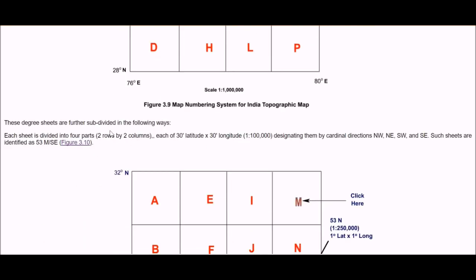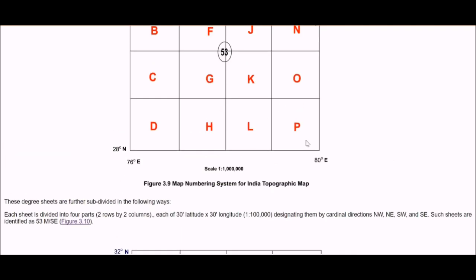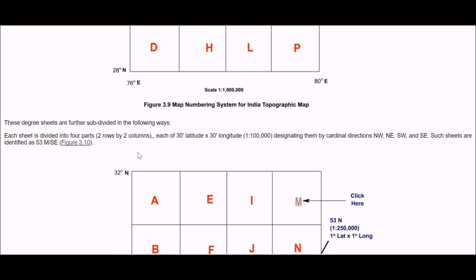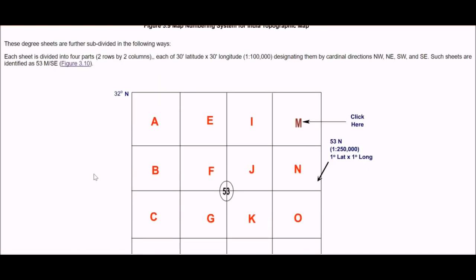These degree sheets are further subdivided. Each sheet is then subdivided into 4 parts, that is 2 by 2 columns. Let us see this M which is blinking, each of 30 minutes now, not degree, but 30 minutes latitude and 30 minutes longitude, that is 1 is to 100,000, designated with cardinal directions northwest, northeast, southwest and southeast. Such sheets are identified as 53M then southeast.